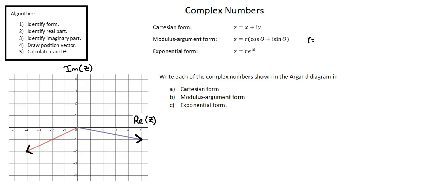r is the modulus of the complex number, which is the magnitude of the position vector representing the complex number in the argand diagram.